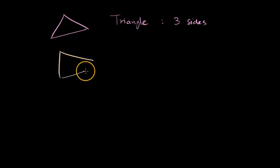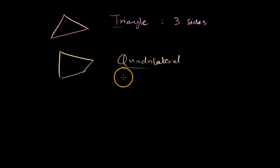And you also know about a quadrilateral like this, which has four sides. So this is known as a quadrilateral. Quad means four, it has four sides or four angles.